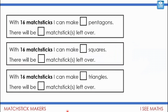Let's start with this: with 6 matchsticks I can make how many pentagons — and how many matchsticks would be left over? What about with 16 matchsticks, how many squares and how many left over? And 16 matchsticks, how many separate triangles will you be able to make, and how many left over? Pause the video and have a go — you might work that out mentally, do a drawing, or get those matchsticks out.